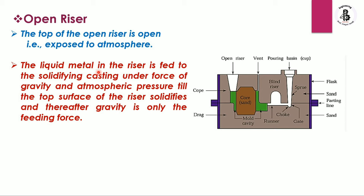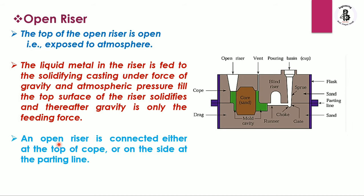The liquid metal in an open riser is fed to the solidifying casting under the force of gravity, because it is open to air and maintains atmospheric pressure until the top surface of the riser solidifies. Thereafter, gravity is the only feeding force. No extra pressure is exerted on the riser, so by gravitational force it fills the molten metal during the solidification process into the mold cavity. An open riser is connected either at the top of the cope or on the side at the parting line.